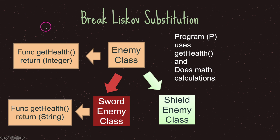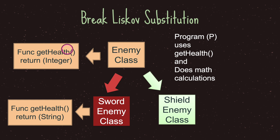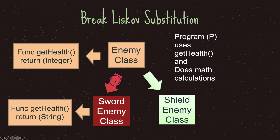We have an enemy class and it has a function get_health, and the most important part is that it returns an integer value. Program P uses get_health and does math calculations — it's expecting an integer when it calls get_health. We also have a shield enemy class that inherits from the base enemy class, and notice how we don't override anything here, so our shield enemy class doesn't break the Liskov Substitution Principle.